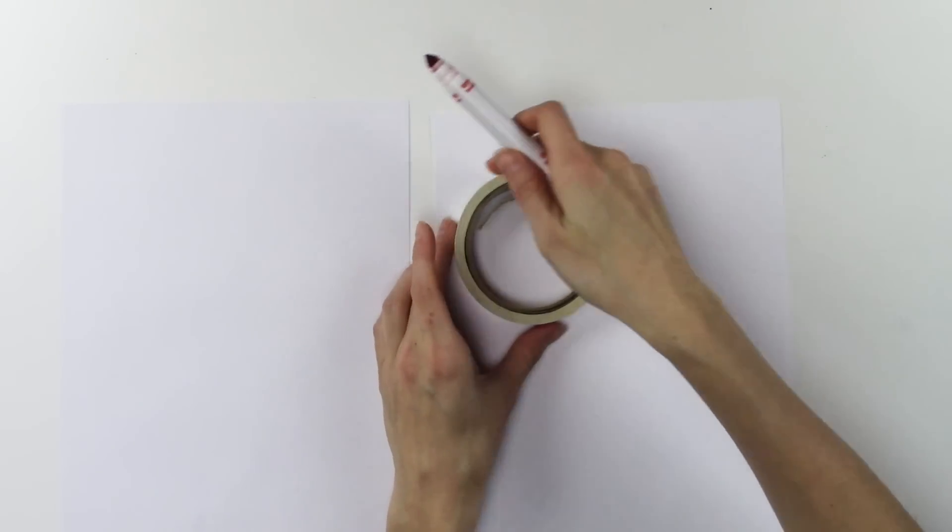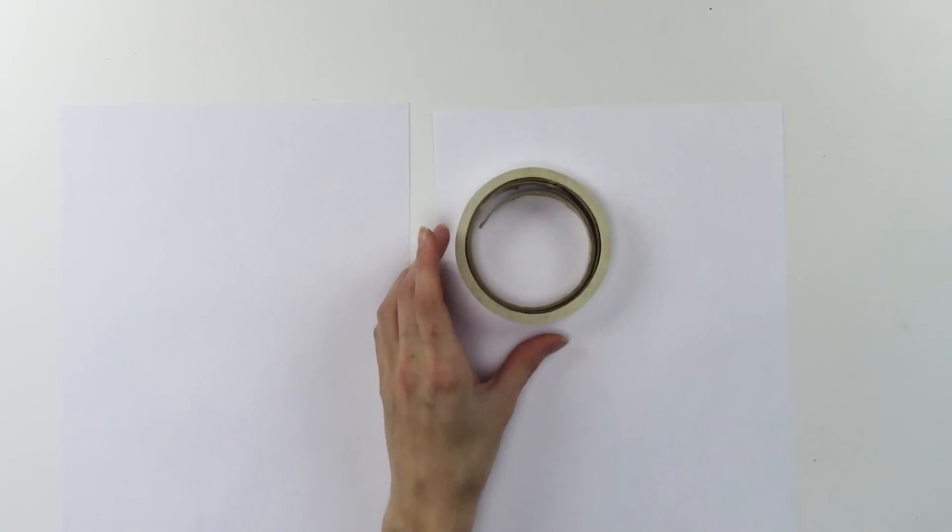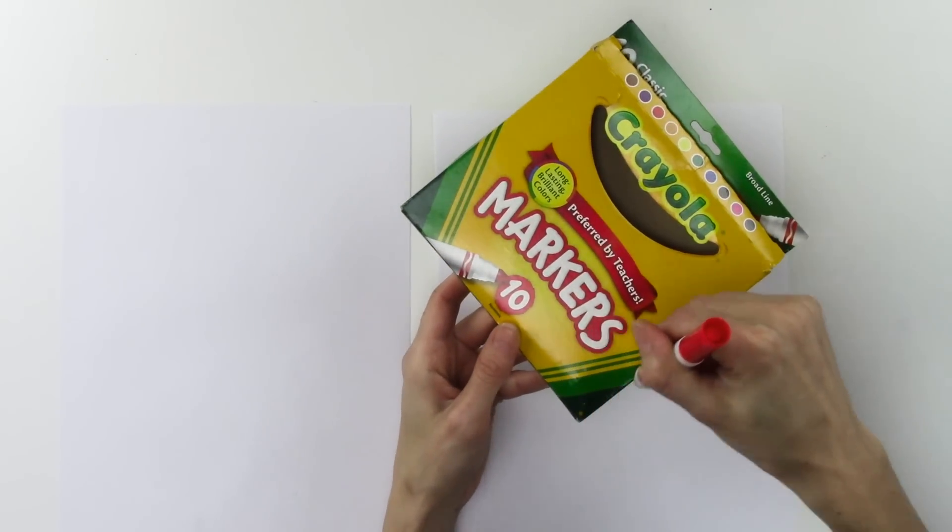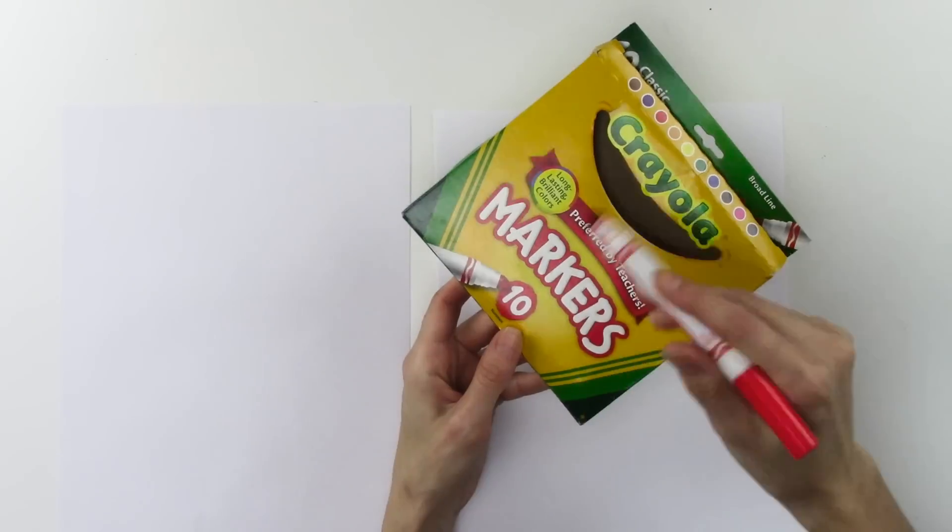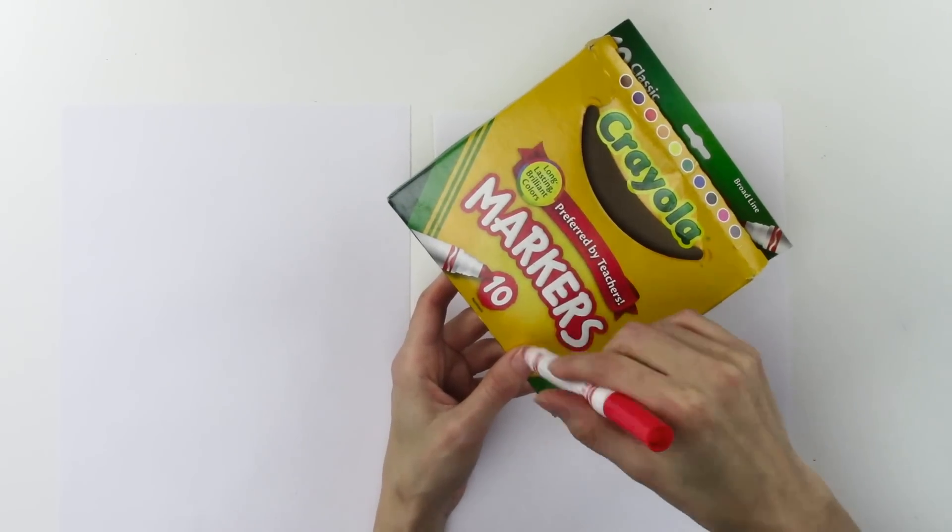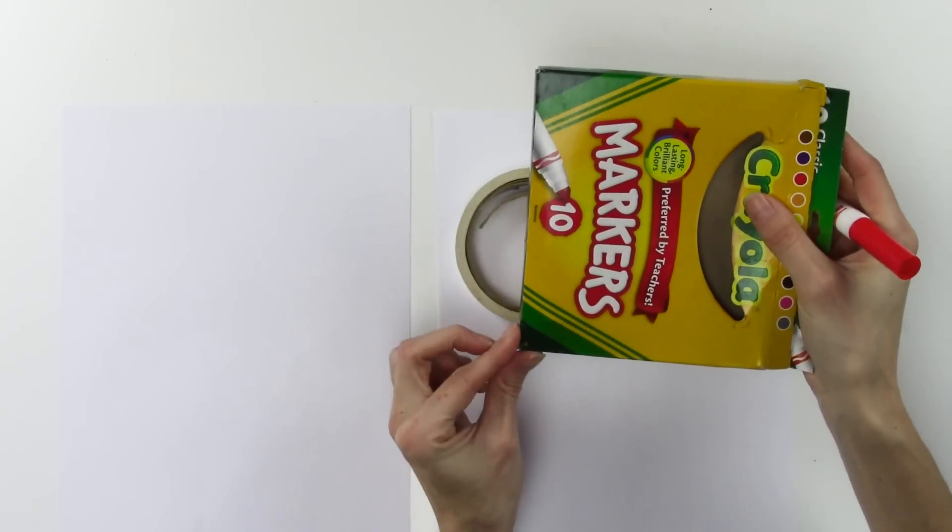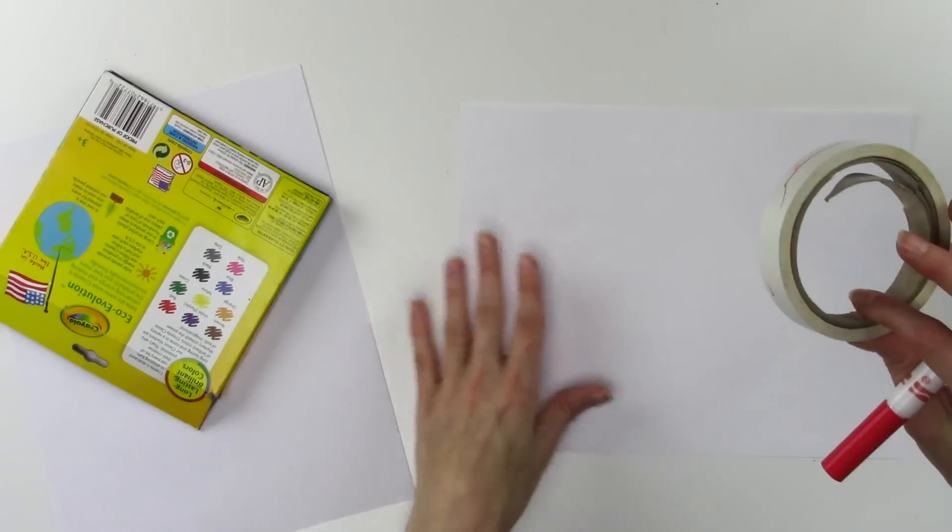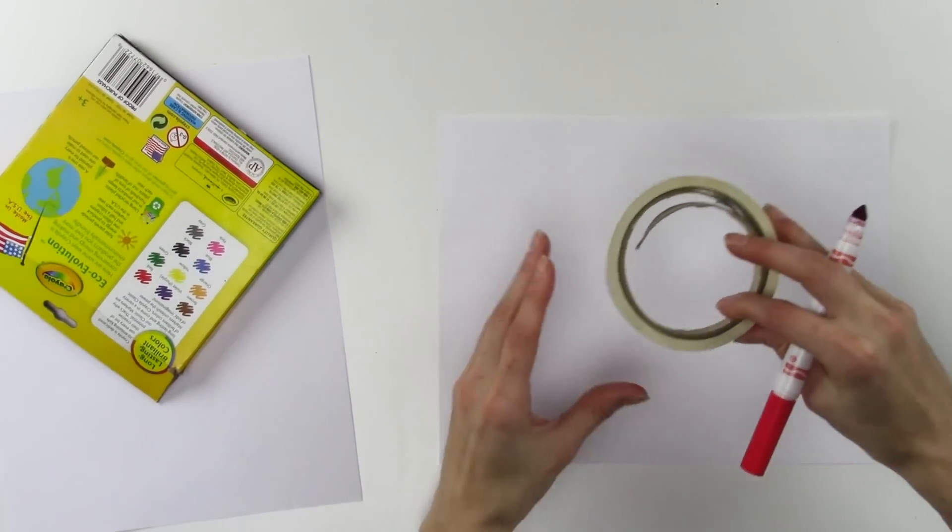What you want also is something that is a circle and something that has a square edge. This marker container works perfectly, but you can find a book or something that has this perfect angle right here.